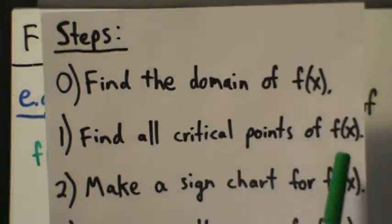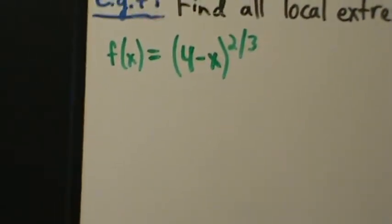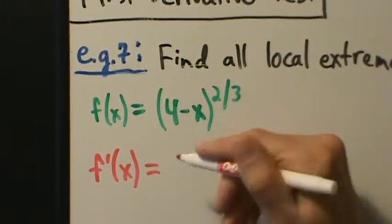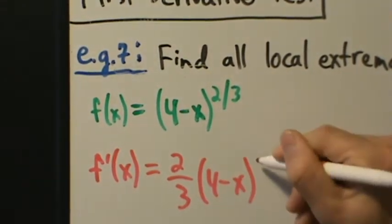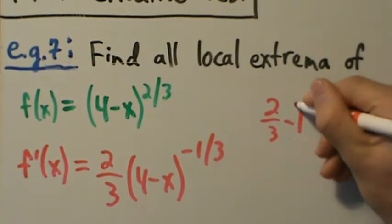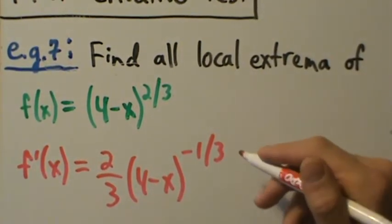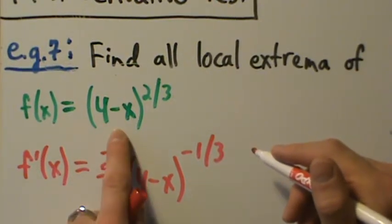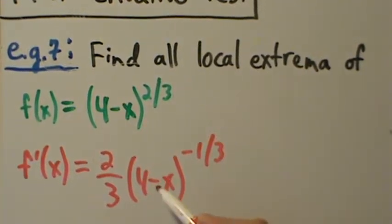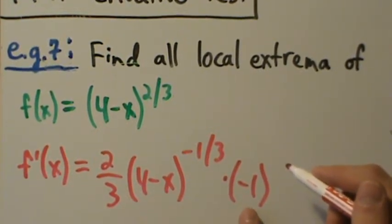Step one: find all the critical points. We take the derivative and find out where the derivative is zero and where it is undefined. Using the power rule and chain rule: the power rule gives us two-thirds comes down, and then four minus x to the negative one-third, because we subtract one from the exponent — two-thirds minus one equals negative one-third. Then the chain rule says multiply by the derivative of four minus x, which is negative one. So that's our derivative.